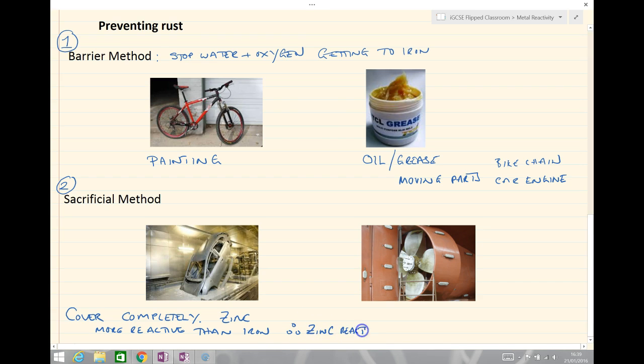Now, often you might cover this again. So sacrificial method, we could cover completely in a more reactive metal like zinc, and the more reactive than iron the zinc is, therefore the zinc reacts first. The other way,